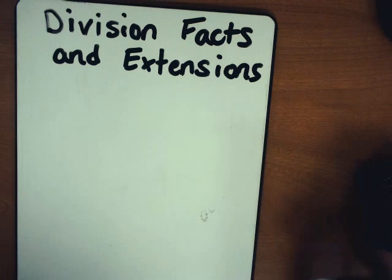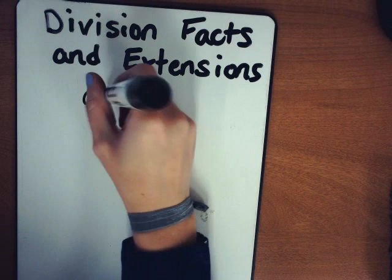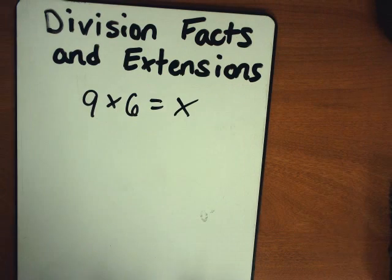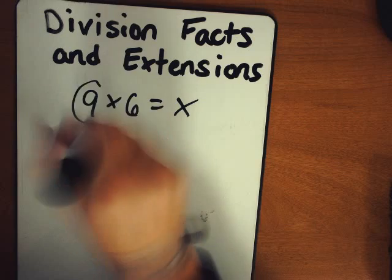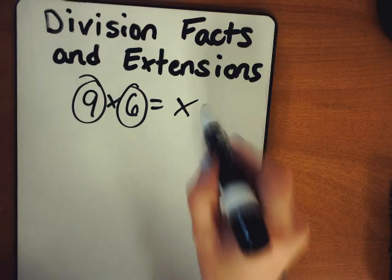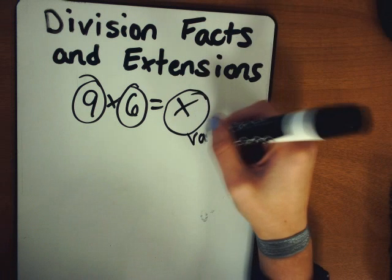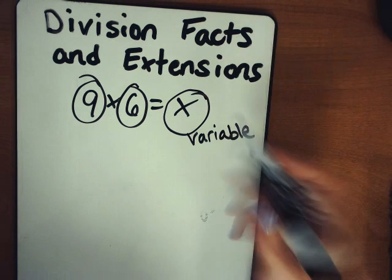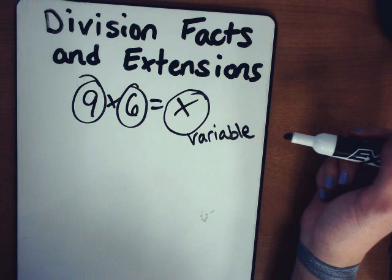So I want you to write three numbers that are in the fact family 9 times 6 equals x. What are the three numbers in that fact family? Go ahead and write that down and circle them for me. Right, we've got 9 times 6 and x also is part of that fact family. It's what we call a variable. A variable stands for a number. In this case, it stands for the number 54.